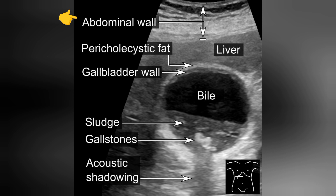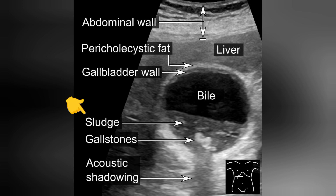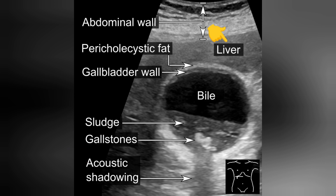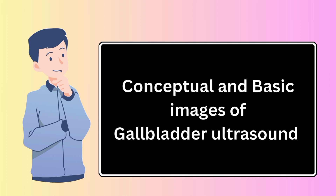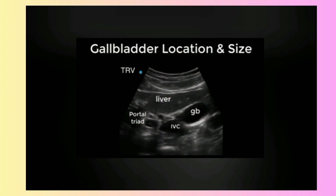First point: abdominal wall. Second: pericholecystic fat. Third: gallbladder wall. Fourth: sludge. Next: gallstones. Next: acoustic shadowing. Then liver. Last point: bile. Viewers, अब हम आपके साथ discuss करने जा रहे हैं conceptual and basic images of gallbladder ultrasound.